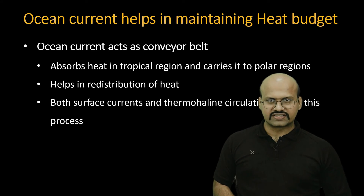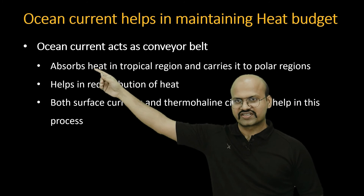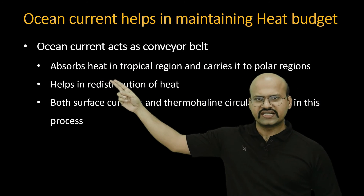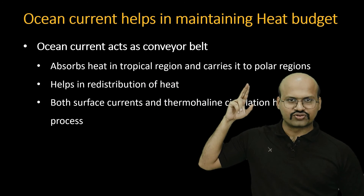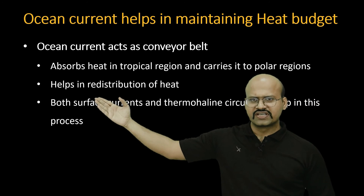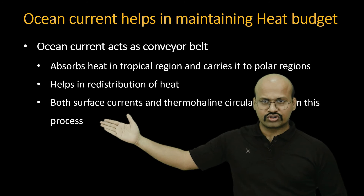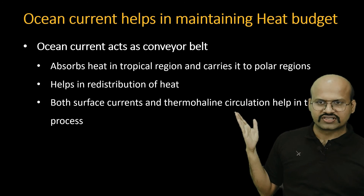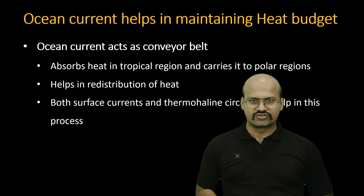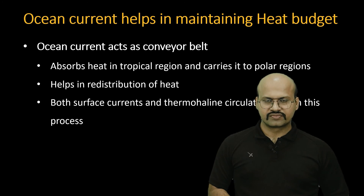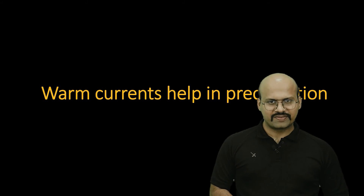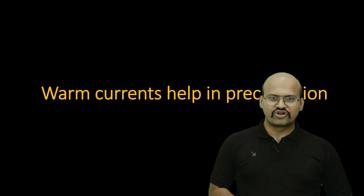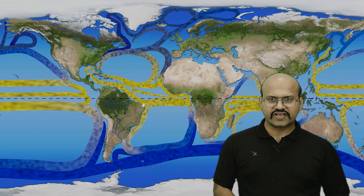To summarize: the ocean currents act as a conveyor belt, absorbing heat in the tropical region and carrying it to the polar region. This helps in the redistribution of heat through both surface currents and deep currents in thermohaline circulation. Additionally, warm ocean currents help bring precipitation to the eastern margins of continents in the tropical region.